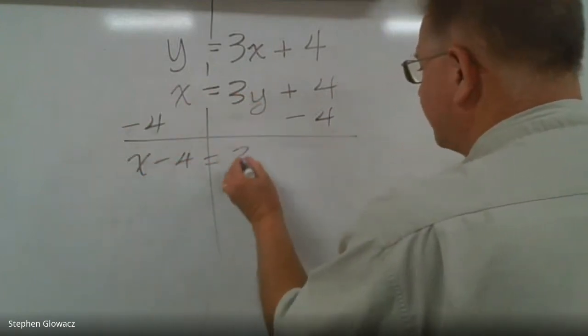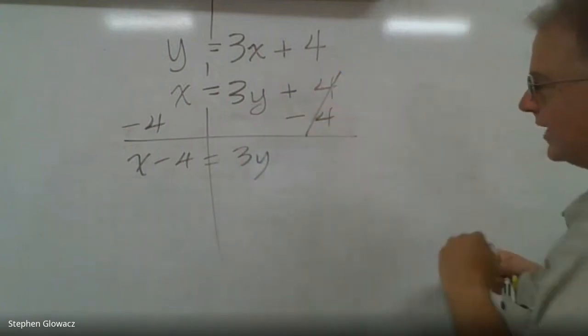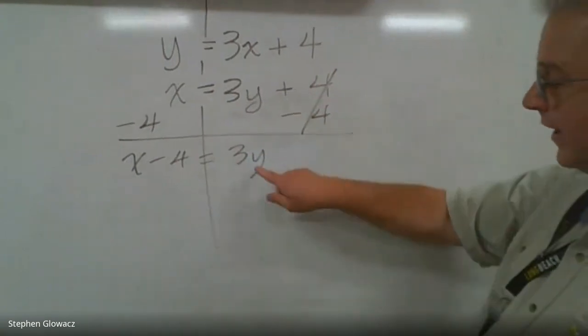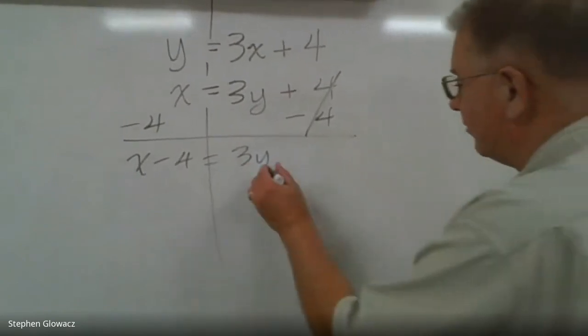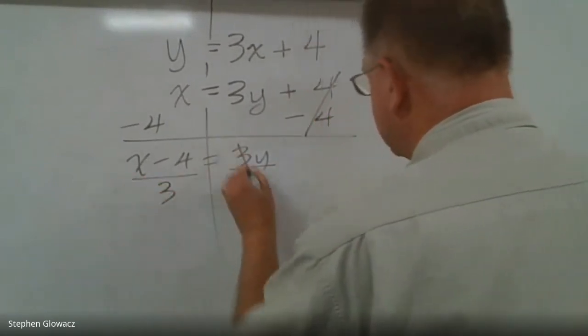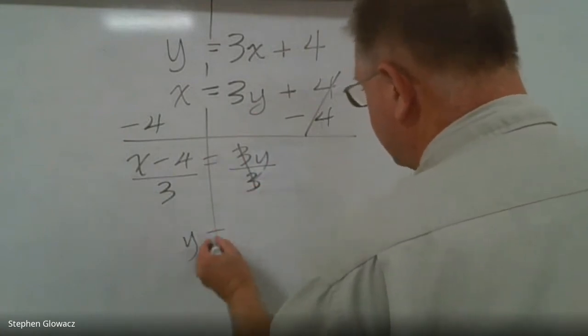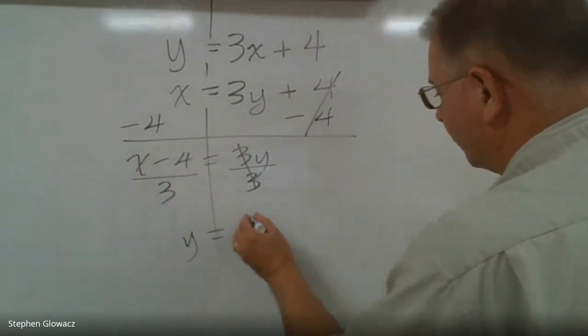Finally, to get y by itself to solve for y, y is being multiplied by 3, so we divide by 3 on both sides, and we get y = (x - 4)/3.